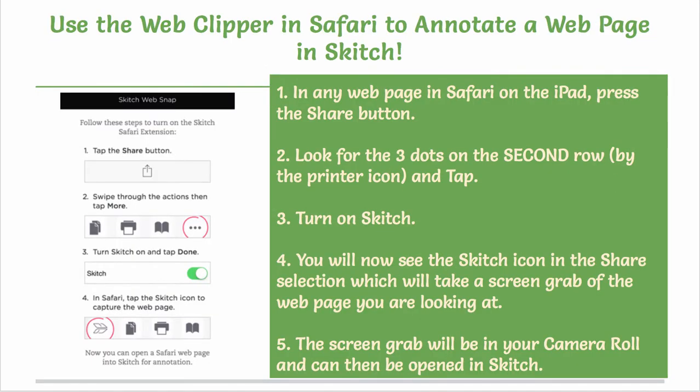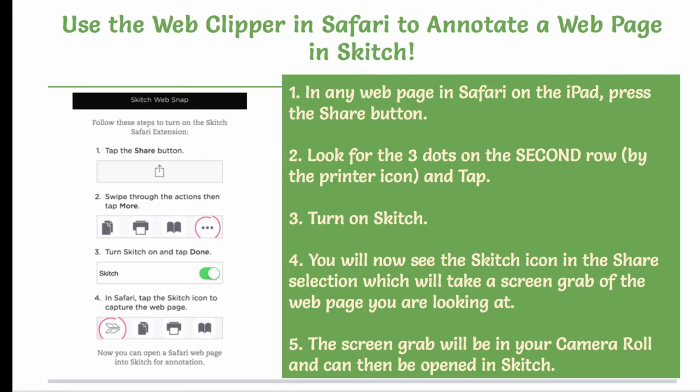You can also add what is called a web clipper in Safari to annotate a web page in Skitch. If you are in any web page in Safari on the iPad, press the share button. Look for the three dots on the second row — it is by the printer icon — and tap on it. Turn on Skitch. You will now see the Skitch icon in the share selection, which will take a screen grab of the web page you are looking at. The Skitch icon is in line 4 with a circle around it. The screen grab will be in your camera roll and can then be opened in Skitch.